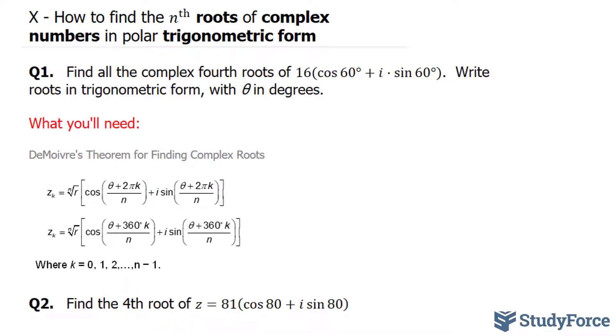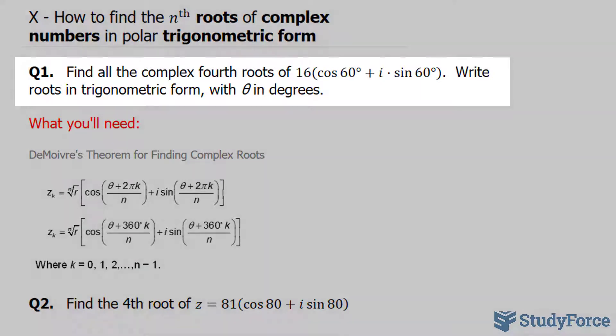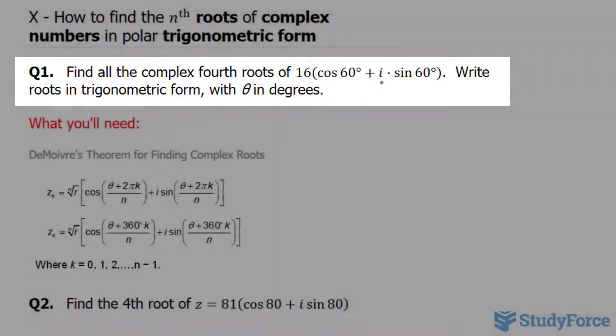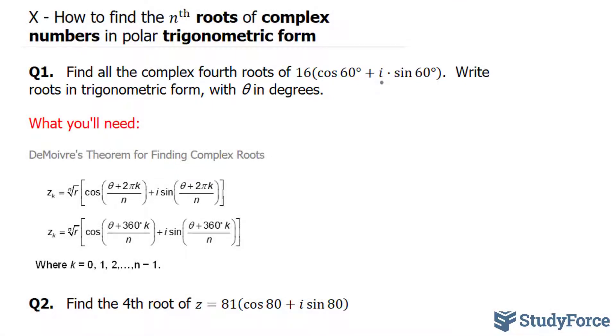In this lesson, I'll show you how to use DeMoivre's theorem to find the roots of complex numbers in polar trigonometric form. The question reads: find all the complex fourth roots of 16(cos 60° + i sin 60°). Then write the roots in trigonometric form with θ in degrees.